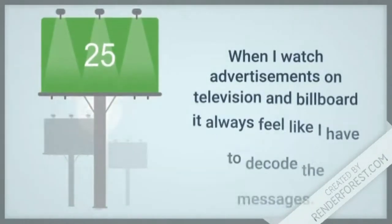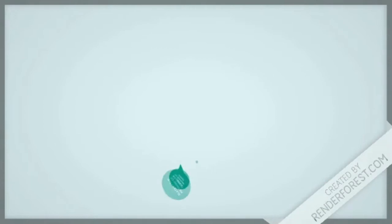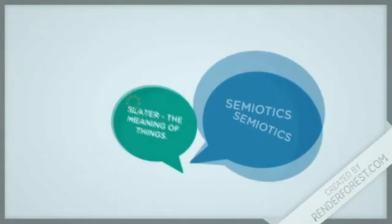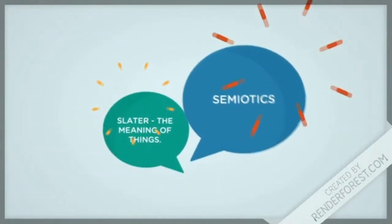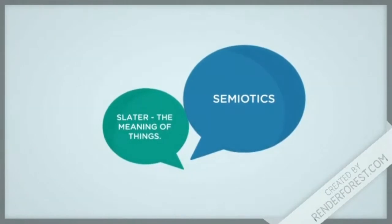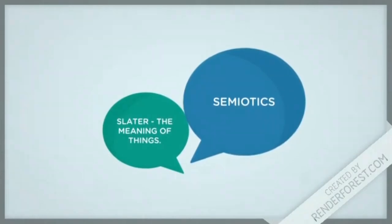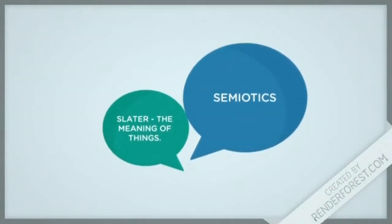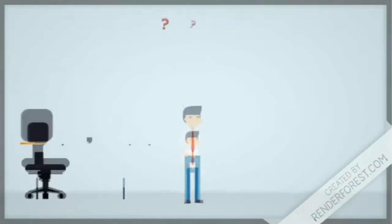In the reading, The Meaning of Things by Slater, there is semiotics, which is the study of signs and symbols. The passive audience tends to understand more of the signifier without going beyond, while the active audience understands both the signifier and the signified.